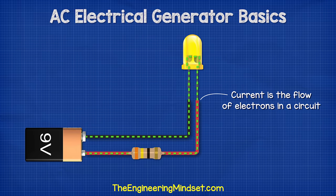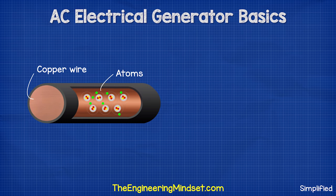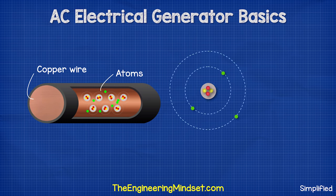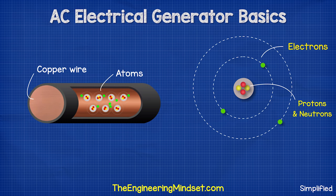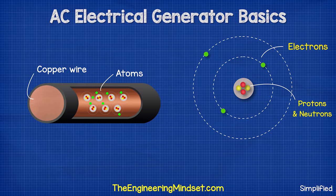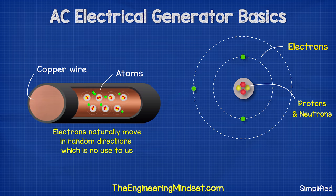Electricity is the flow of electrons in a wire. The copper wire is made from millions and millions of copper atoms. Each atom has a free electron — an electron which is able to move freely between other atoms. It does move to other atoms by itself, but this occurs randomly in any and all directions, which is of no use to us.